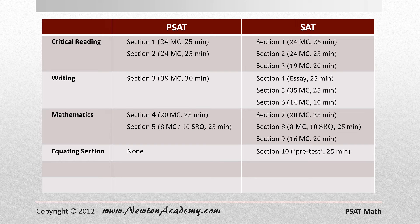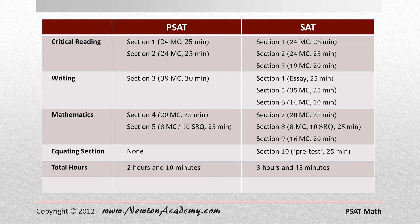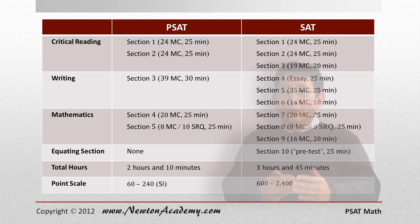The section numbers you see here do not represent the actual section numbers on the real SAT or PSAT — they actually scramble them for each test. As you can see in the total hours for the exams, the PSAT can be considered a short version of the SAT. The point scale for the PSAT is one-tenth of the SAT. The combined score of three sections in the PSAT gives you something called a selection index (SI), which is used for selecting high-scoring students for recognition.